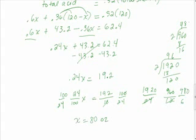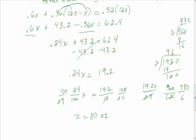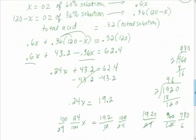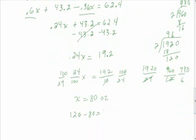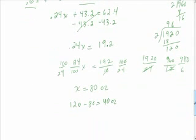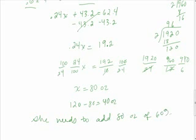You can divide the 960 by 12, because 96 divided by 12 is 8 and a 0, but apparently I need to divide it in 2 instead. We have 80 ounces of 60% solution, so 120 minus 80 gives us the 40 ounces of the other one. She needs to add 80 ounces of 60% and 40 ounces of 36%.